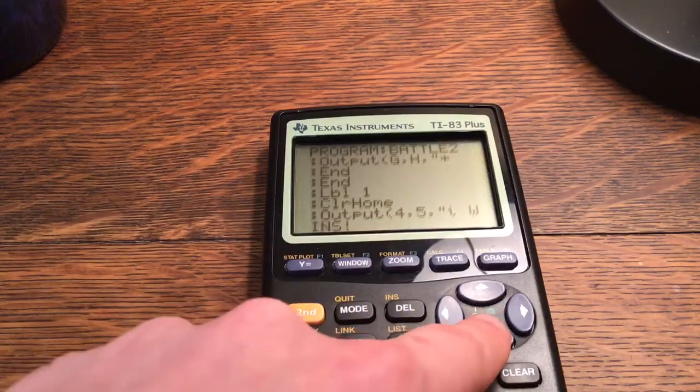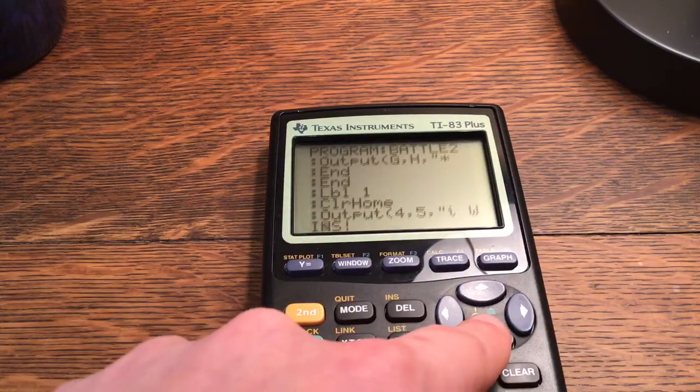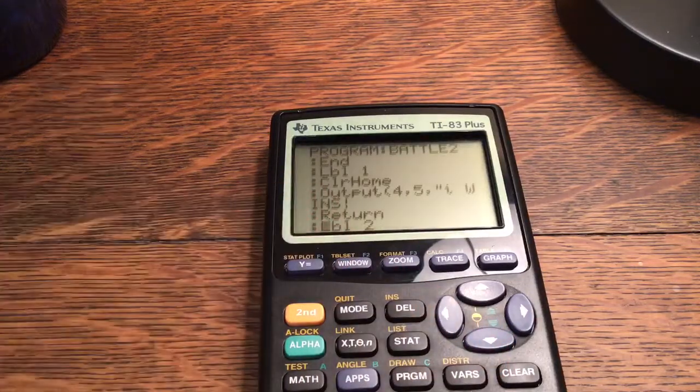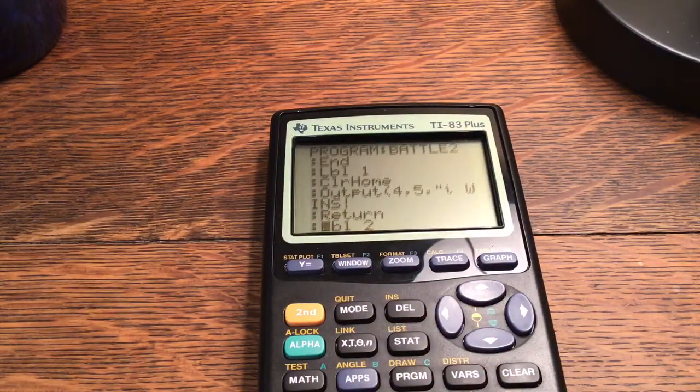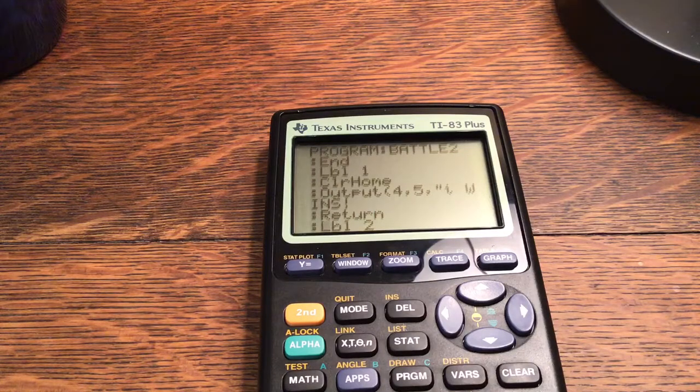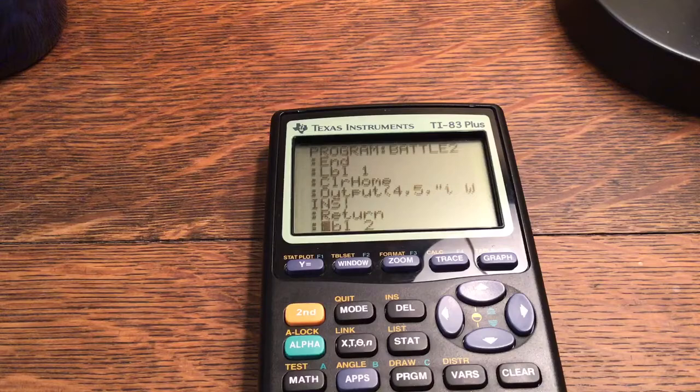Label 1. Clear home. Output 4, comma, 5, comma, I wins. Return. And I learned to not use stop because that can actually cause issues in your program. So, thank you for that. I believe that was Zdude who told me that.